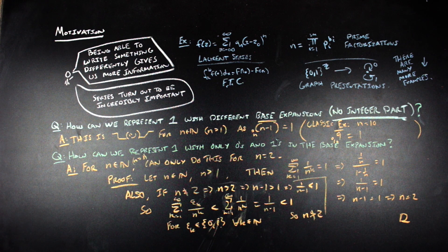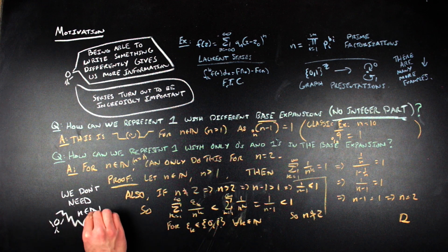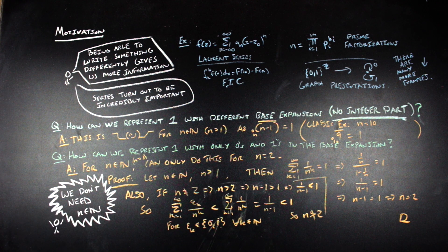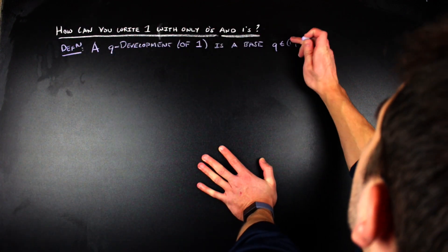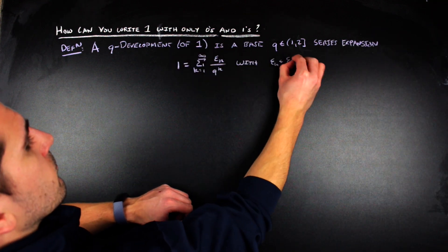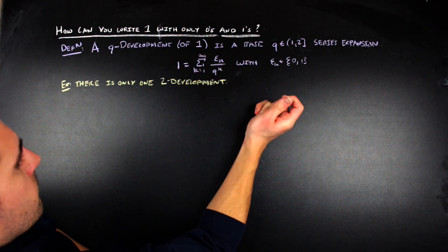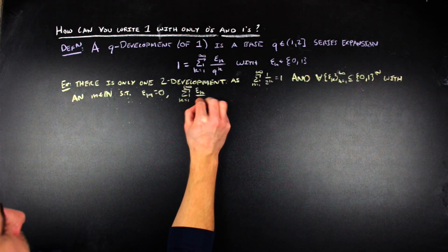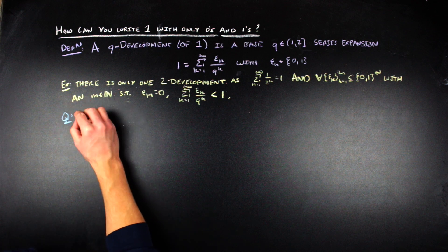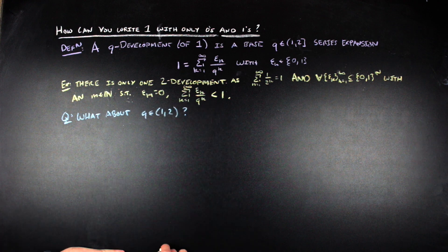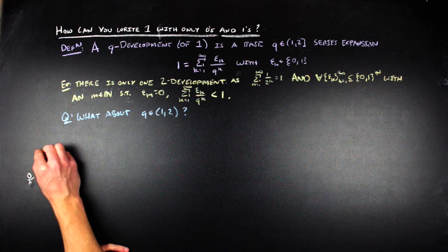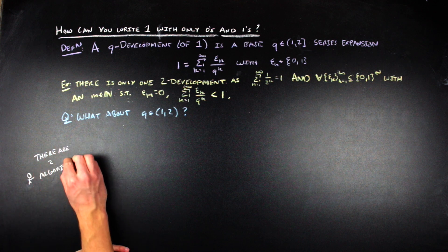However, when writing 1 with just 0s and 1s, we don't need to just think about a positive integer base expansion. We can in fact do this for any number between 1 and 2, including 2. Any such expansion in base q of the number 1 using just the digits 0 and 1 is called a q-development of 1. We already saw that when q equals 2, there's exactly one q-development. However, when you restrict to q strictly between 1 and 2, more interesting stuff happens — there are two different algorithms we can use to generate a q-development that may be non-unique.